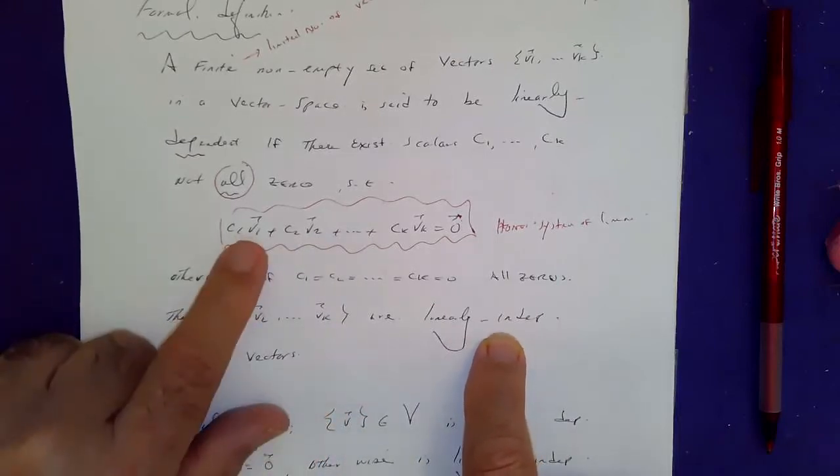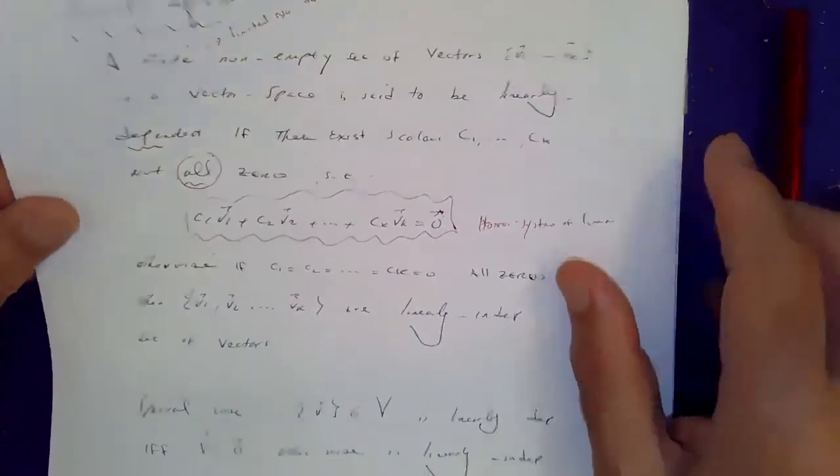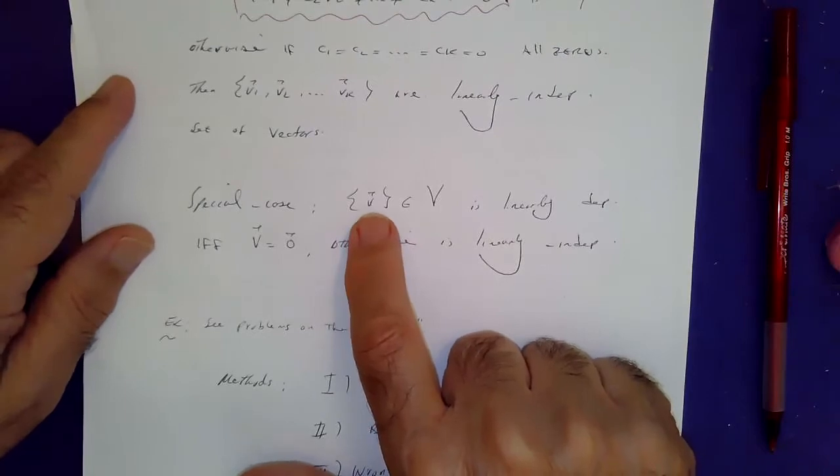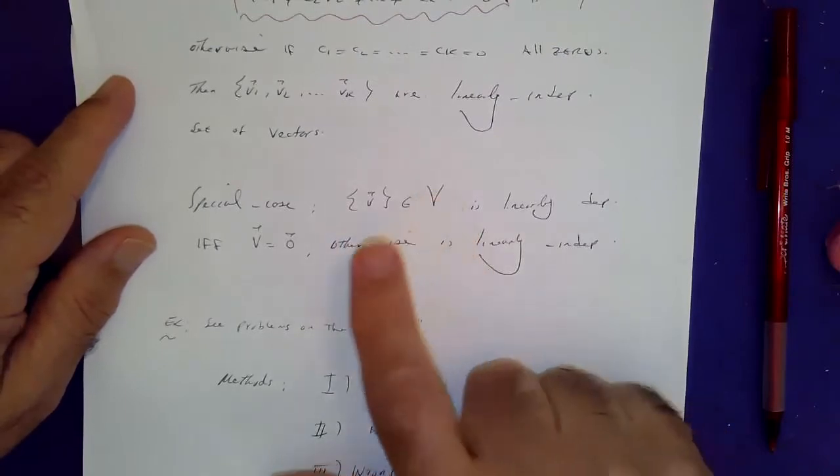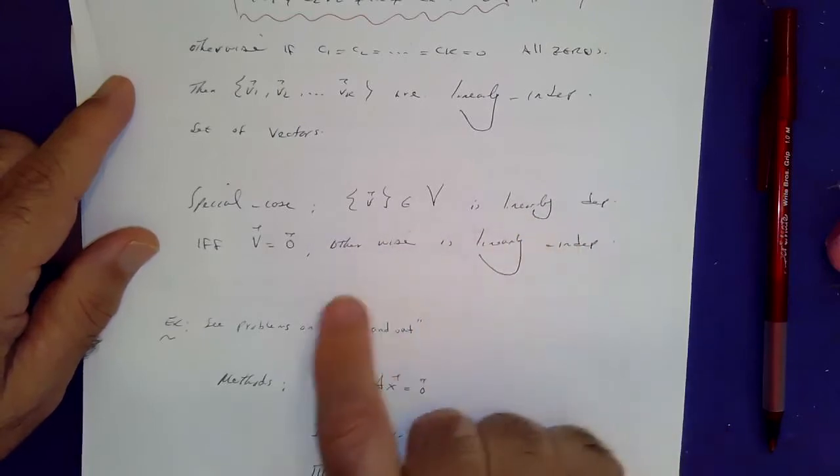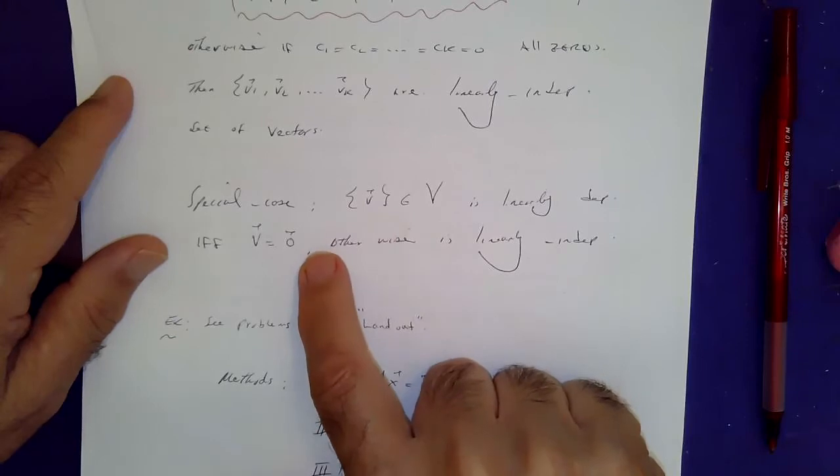Otherwise, all it takes for one of these C's not to be zero, then in that case the vectors are said to be linearly dependent. Special case, if you got nothing but one vector in the vector space, this vector is linearly dependent if the vector is the zero vector. Otherwise, it's linearly independent.